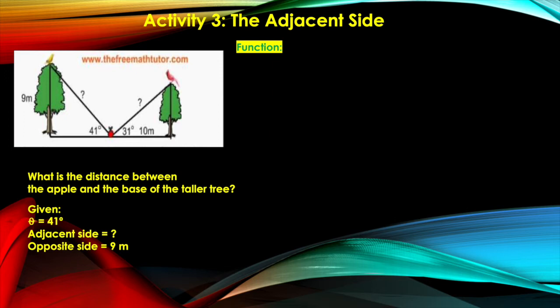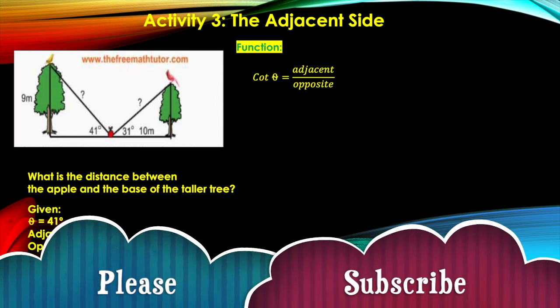Remember, the easiest way or the simplest way to do it is when we put the unknown side on top of the fraction, or of the ratio. So we put the adjacent side on top and then put the opposite side at the bottom, and that function should be cotangent theta. So the function that we are using here is cotangent theta, which is equal to the adjacent side over the opposite side.